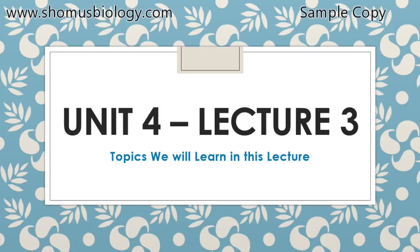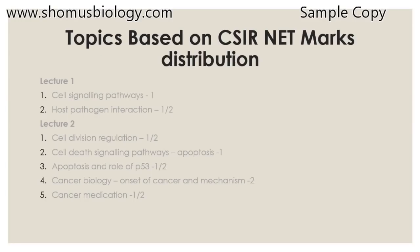This is lecture 3 of unit 4, the last lecture of unit 4. In this lecture we are going to talk about only one big topic: immunology. Generally they ask one to two questions from immunology. In immunology we will talk about the adaptive immune system as well as innate immunity, the primary and secondary immune response, and how exactly the innate immunity interacts with the adaptive immunity to build the immune response. We'll also talk about antigens, antibodies, and how antibodies are produced.